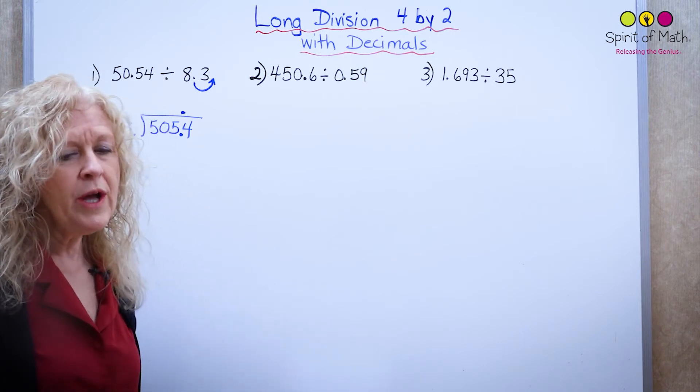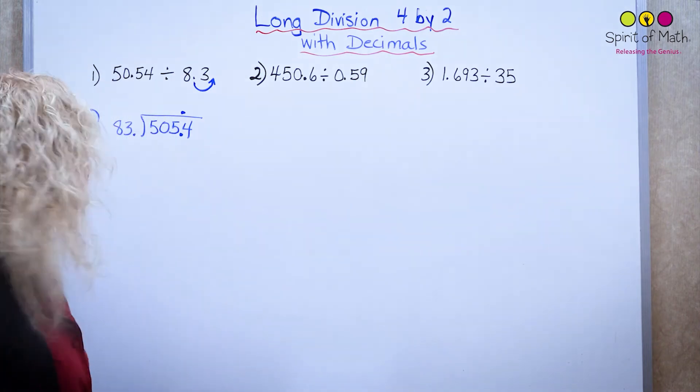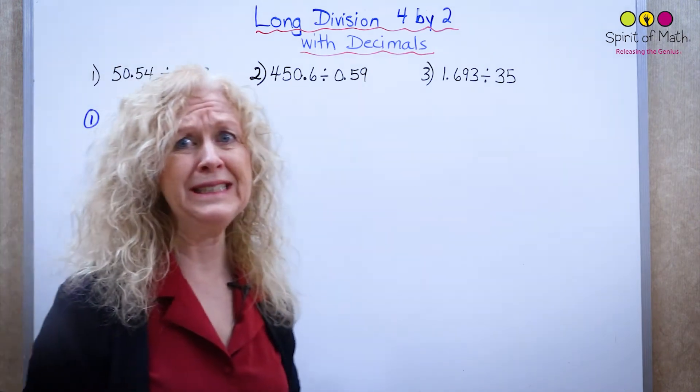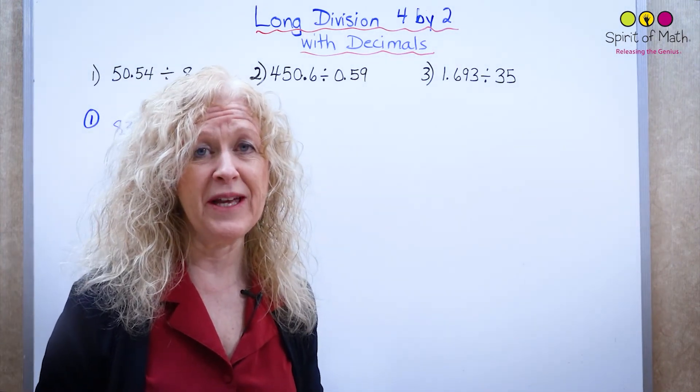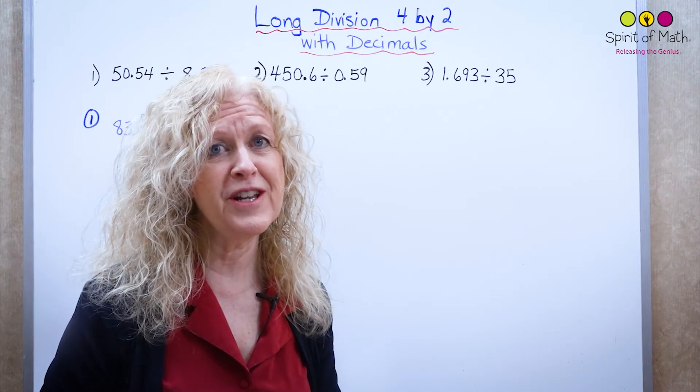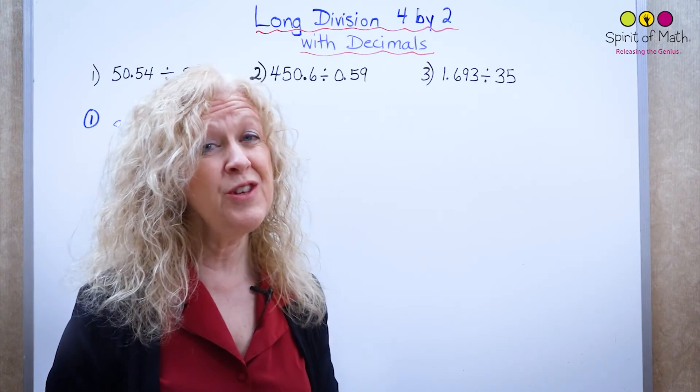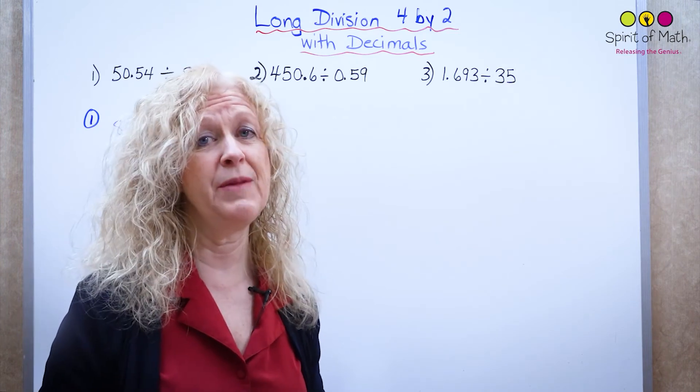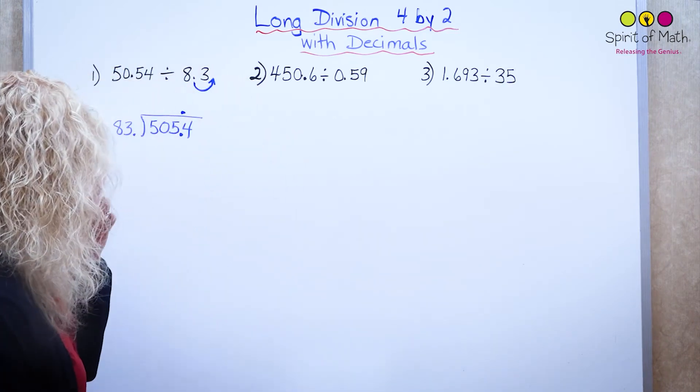So what you've got here is first of all 505 divided by 83. Oh, yikes, that looks pretty big. And the big thing about long division really is about estimation. So you've got to get really good at estimating.